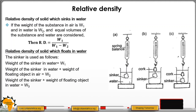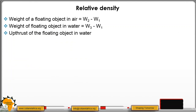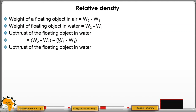From those readings: the weight of the floating object in air is W2 minus W1, and the weight of the floating object in water is W3 minus W1. The upthrust of the floating object is then (W2 minus W1) minus (W3 minus W1).